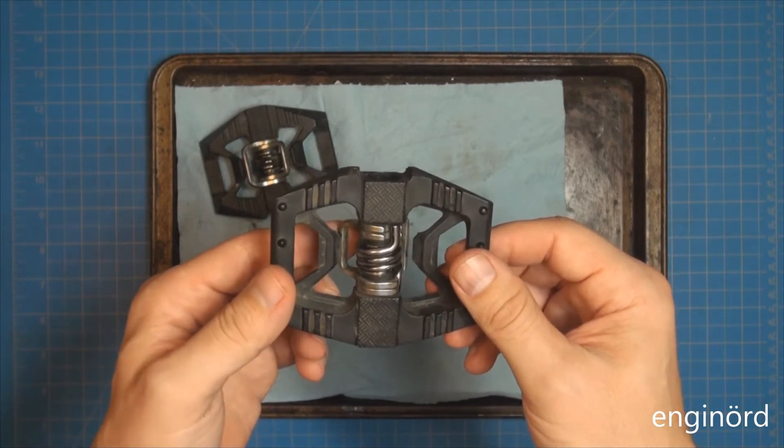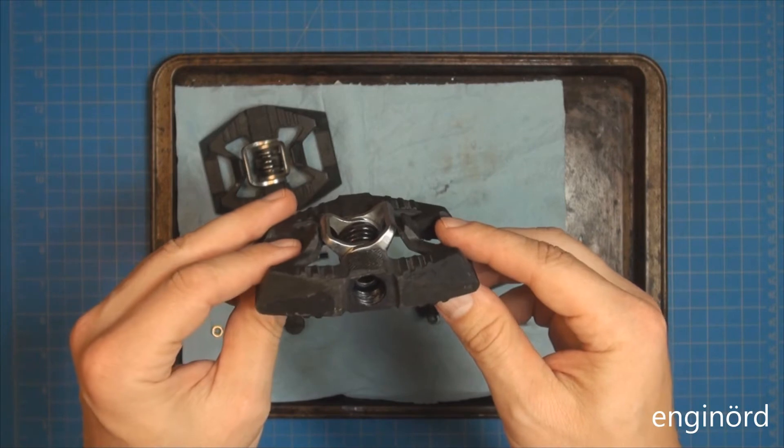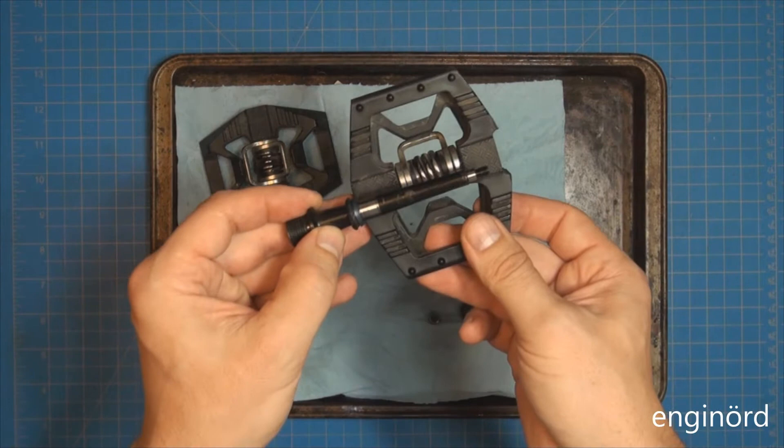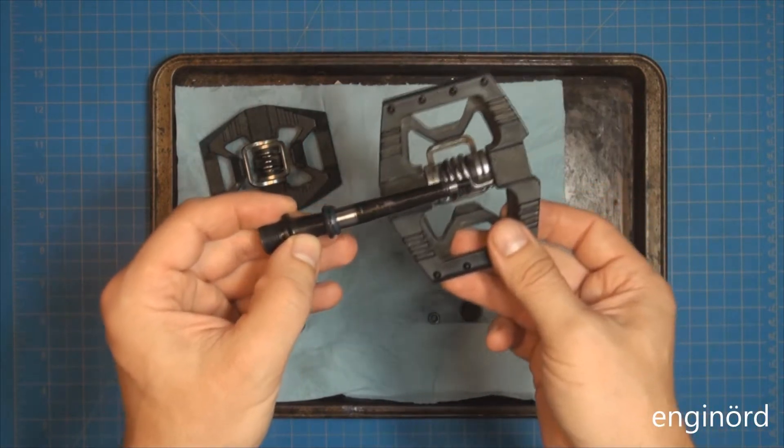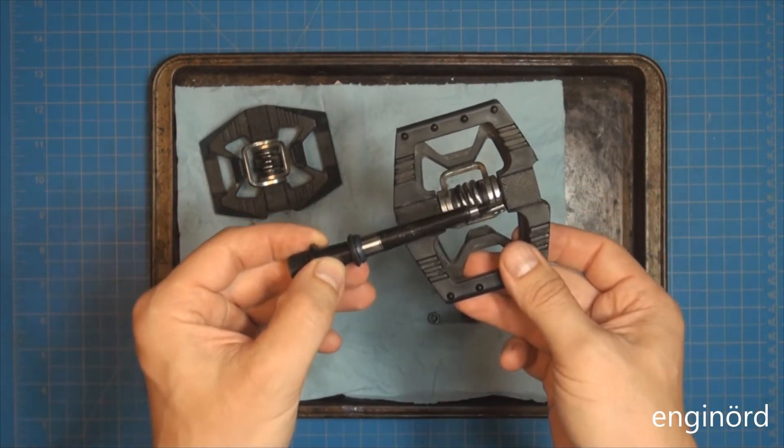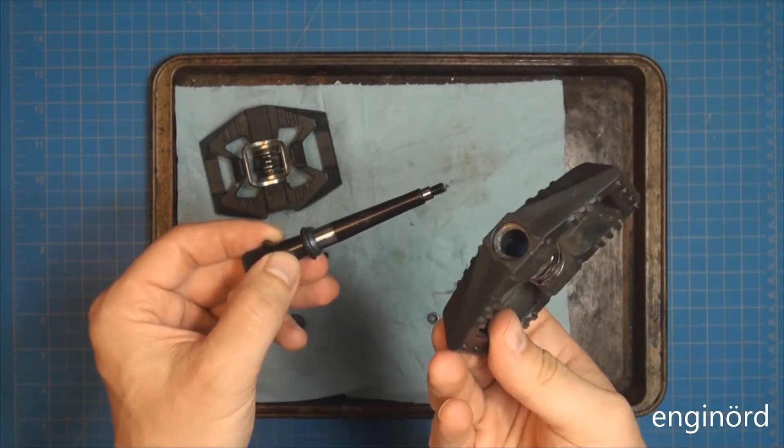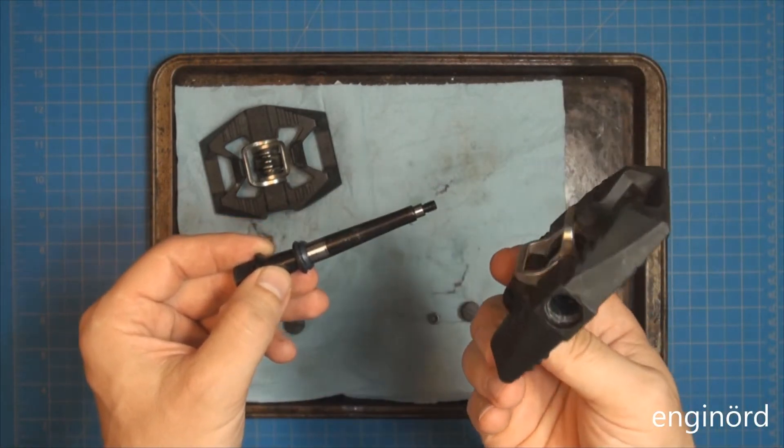And one day they just failed on her. Basically, the failure mode was that the shaft pulled out from the pedal. The shaft stayed in a crank arm, and then the pedal basically just slid off.